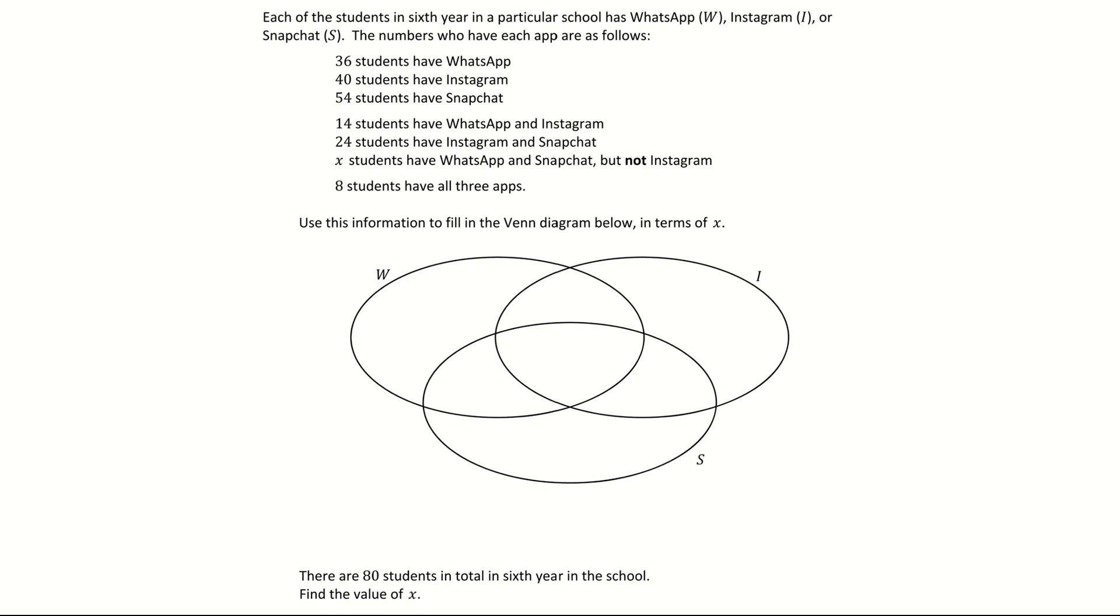In this video we are going to look at Venn diagrams which deal with problems that involve using three sets. We are going to look at two parts to the question. The first part is going to ask us to fill in the Venn diagram and then the second part is going to ask us to solve for a missing letter which outlines a missing section within the Venn diagram.